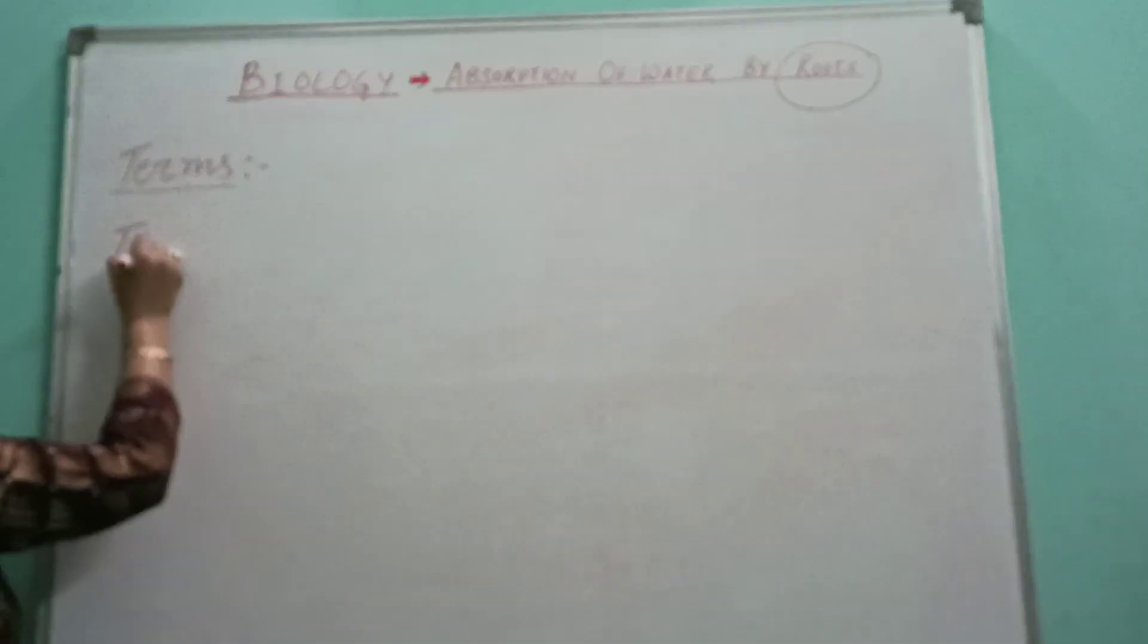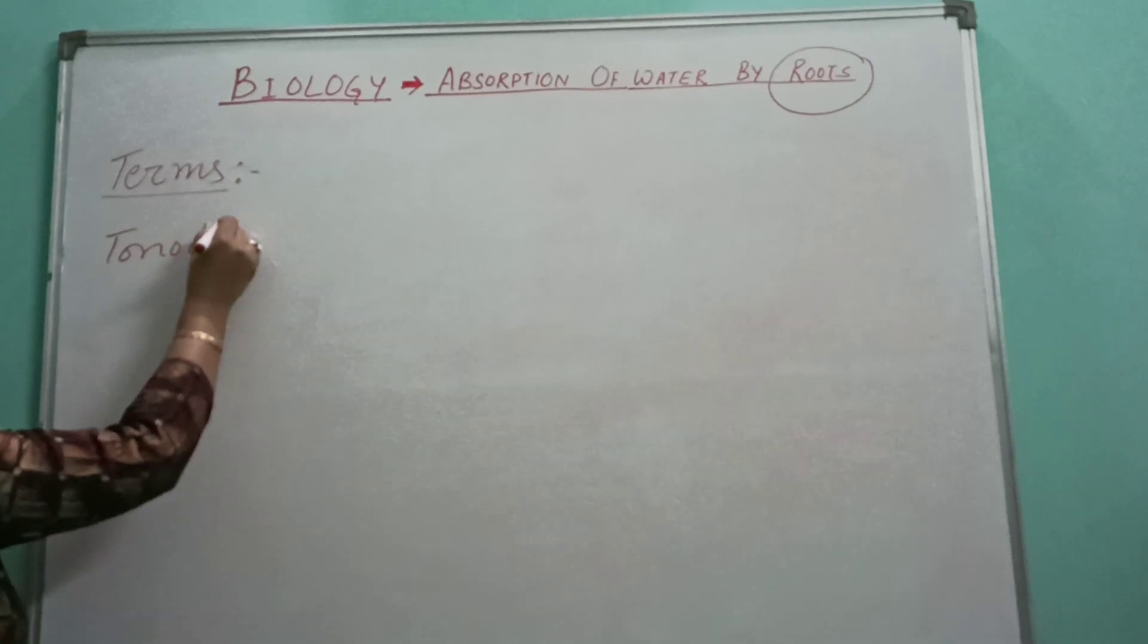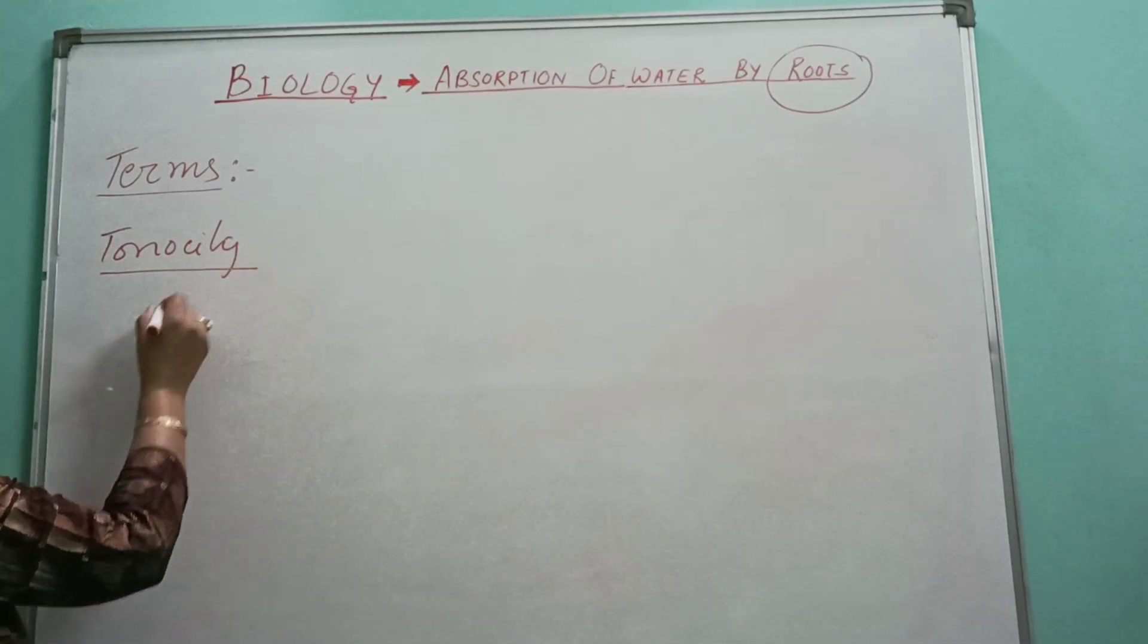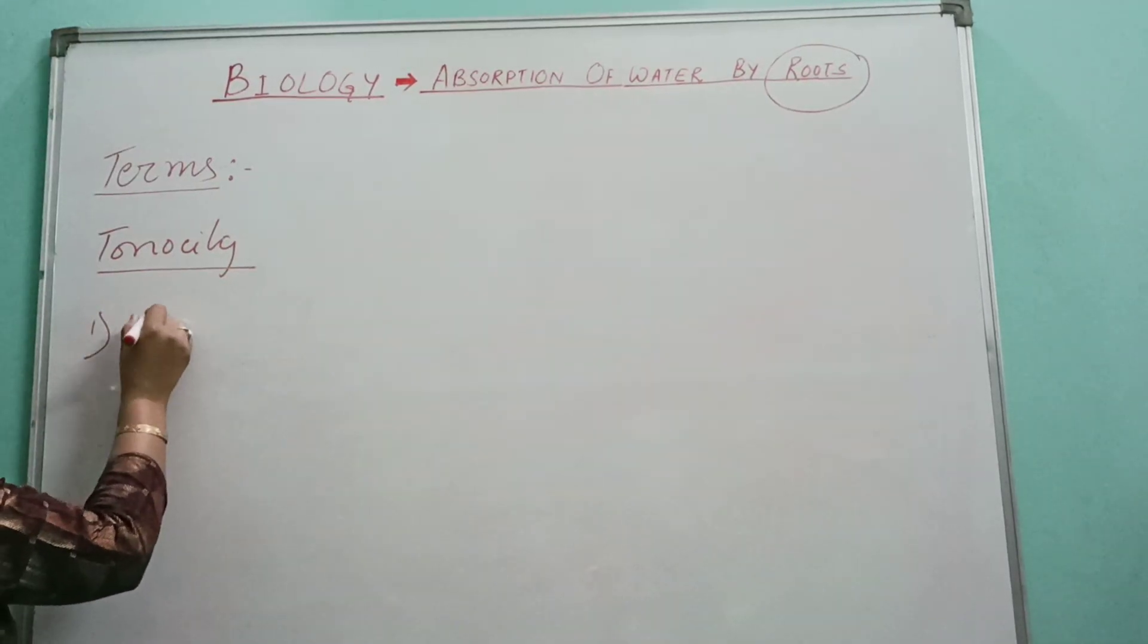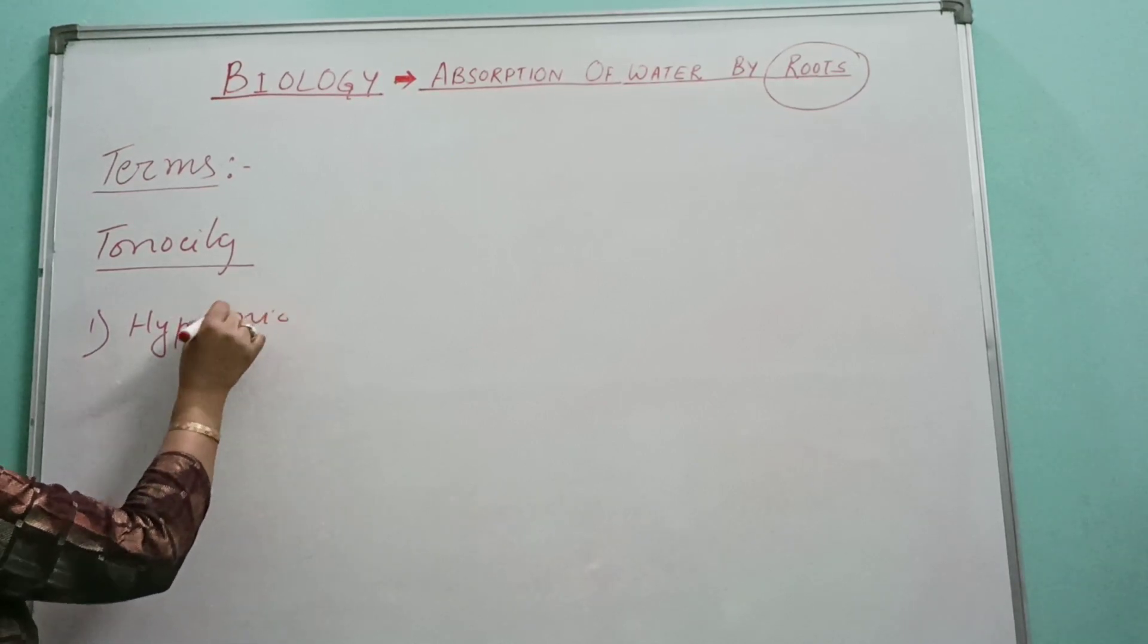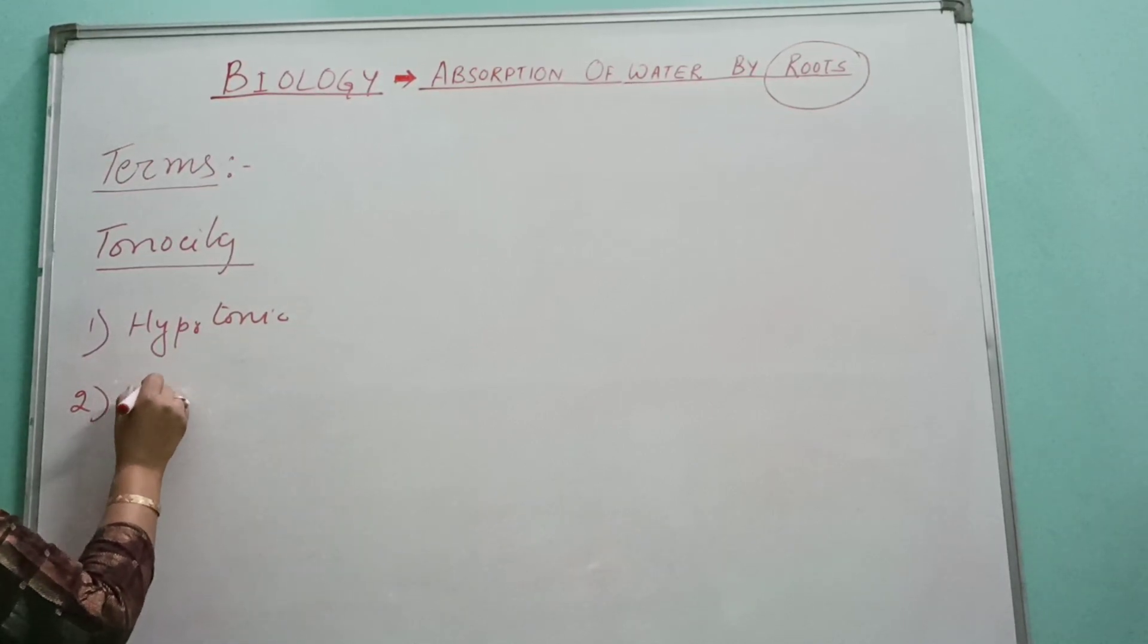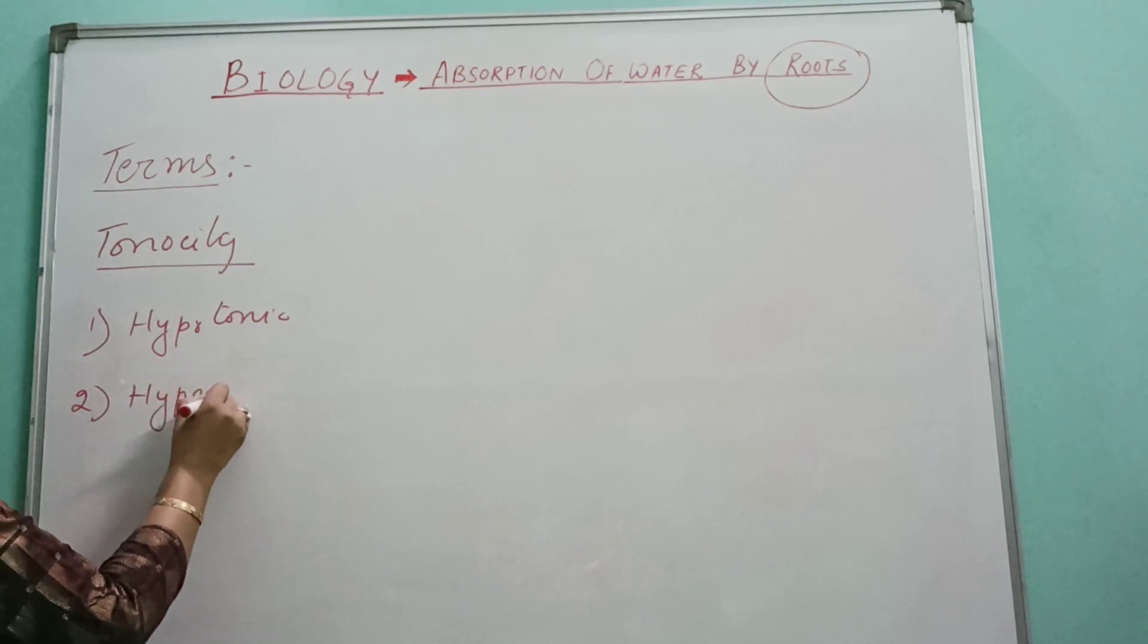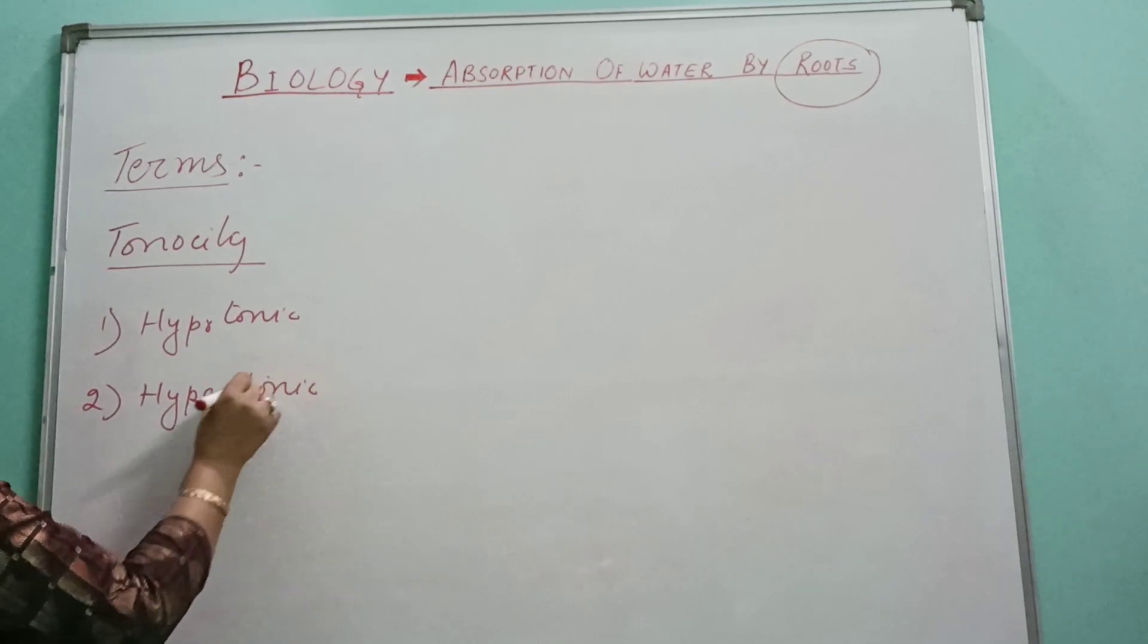Number one is tonicity. When we talk about this, we use the following terms: Number one, hypotonic. Number two, hypertonic. And number three, isotonic.